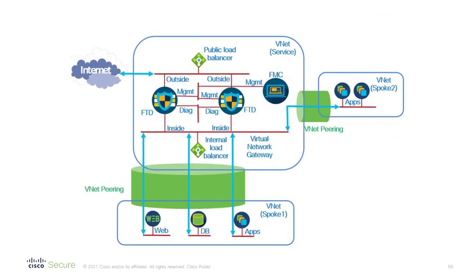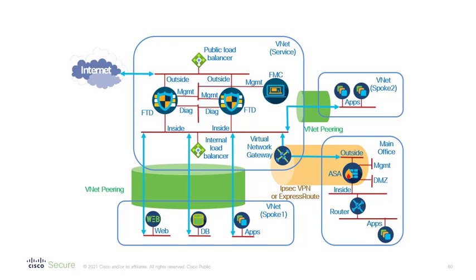Of course, we can have other spokes. Here we're showing two spokes connected to the same hub. If you have an external network you want to connect to this environment, you also connect it to the hub through what's called a virtual network gateway, which will require either an IPsec VPN connection or ExpressRoute — that could be the main office, another Azure environment, or another public cloud environment. All that's left is figuring out how to set up the routing to make sure the traffic we want through the firewalls goes through them, and traffic that should bypass the firewalls does so — that is the subject of the next presentation in this series.